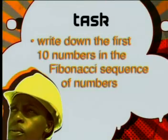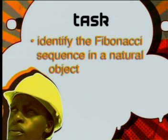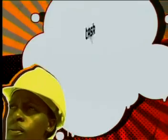Let's recap. In today's lesson we've learnt about patterns and how important they are in our daily lives. We have looked at different kinds of patterns — one kind influenced by many changing factors, meaning predictions can only be approximate; another kind that can be worked out mathematically with accurate predictions, as we saw in the Fibonacci sequence. Your task: write down the first ten numbers in the Fibonacci sequence, and see if you can identify it in a natural object such as a pineapple, pine cone, shell, or flower. That's all for today — bye for now.